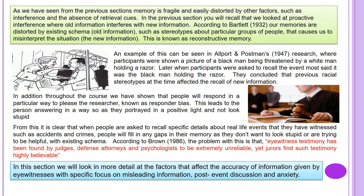This leads to the person answering in a way that portrays them in a positive light and avoids looking stupid. From this it is clear that when people are asked to recall specific details about real-life events they have witnessed, such as accidents and crimes, people will fill in gaps in their memory. According to Brown (1986), eyewitness testimony has been found by judges, defence attorneys and psychologists to be extremely unreliable, yet jurors find such testimony highly believable. In this section we will look at factors affecting accuracy: misleading information, post-event discussion, and anxiety.